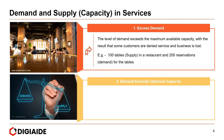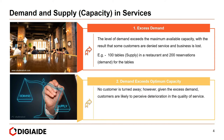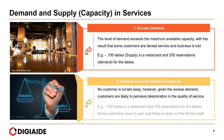Situation number two: demand exceeds optimum capacity. In this case, no customer is turned away; however, given the excess demand, customers are likely to perceive deterioration in the quality of service. Again, there are 100 tables in a restaurant — supply is fixed — and there are about 125 reservations. Some customers have to wait and there is strain on the kitchen and the serving staff.